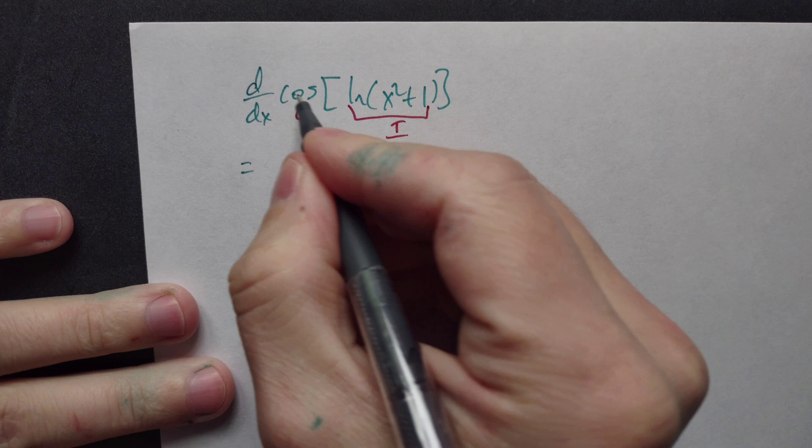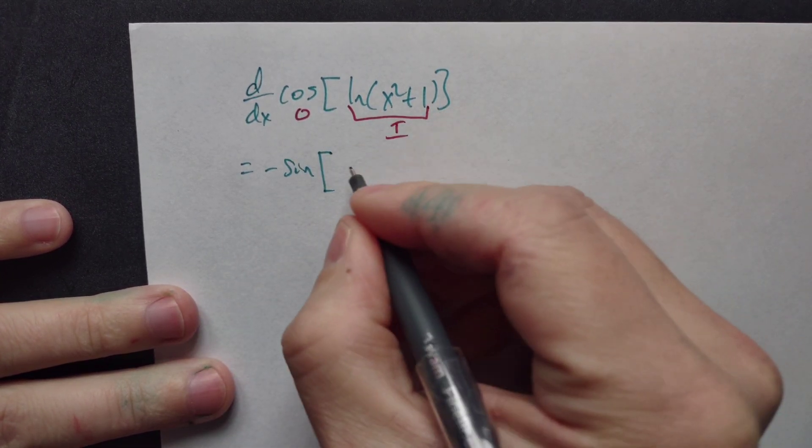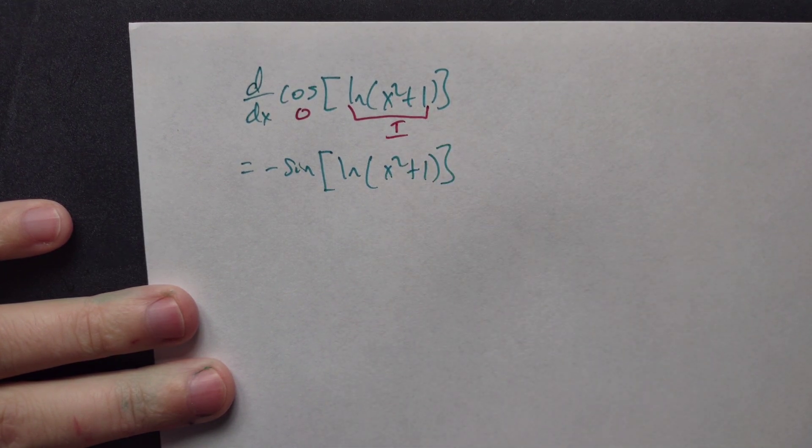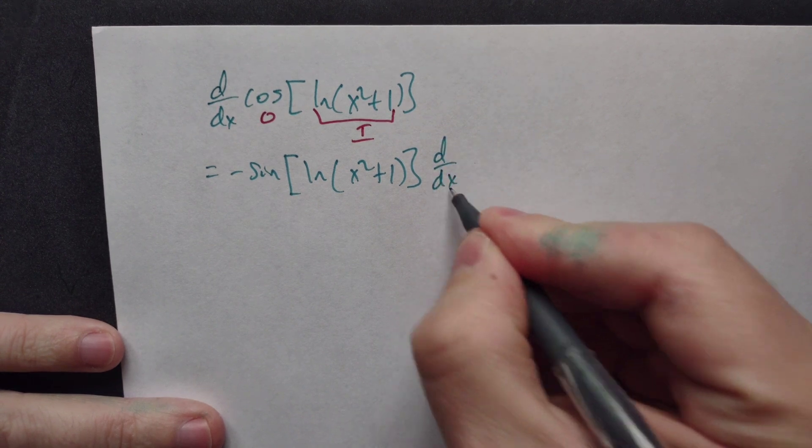So you proceed: cosine differentiated gives you negative sine, then you copy that inside, ln of x squared plus one. But then you have to multiply by the derivative of the inside, so the derivative with respect to x of that ln of x squared plus one.